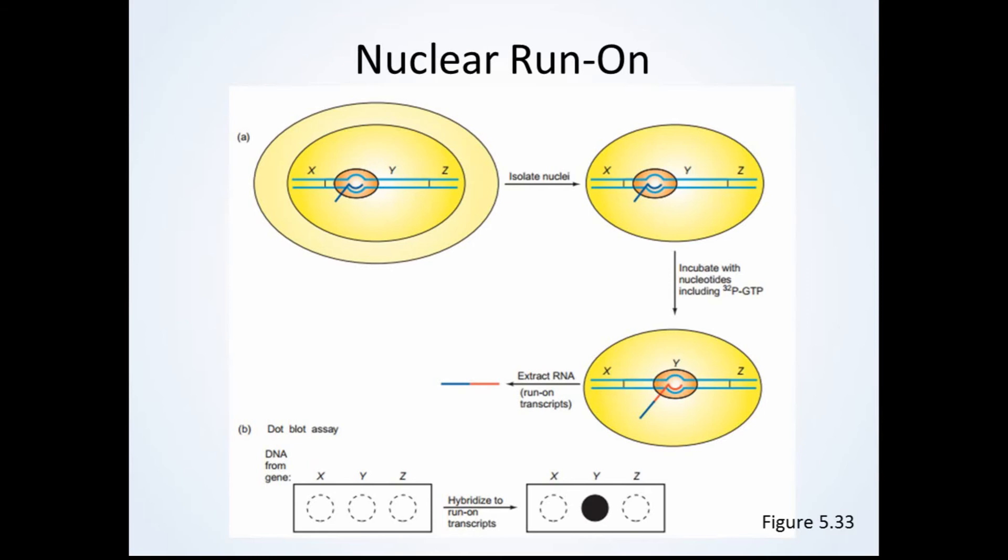The experiments that we are about to discuss are done using a nuclear run-on, which is an assay used to monitor transcription in a given cell. Figure 5.33 shows how this experiment is done. It begins with cells already undergoing transcription. The cell shows that gene Y is being transcribed. The nuclei are then isolated and incubated with nucleotides, one of which is radioactively labeled. Transcription can then continue outside of the cell, or run-on, and the RNA made will then be labeled. Because the nuclei are isolated, it is unlikely for any new transcripts to begin forming. This allows for scientists to measure transcription rates and determine which genes are active.